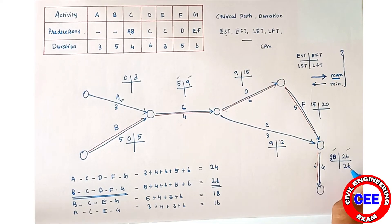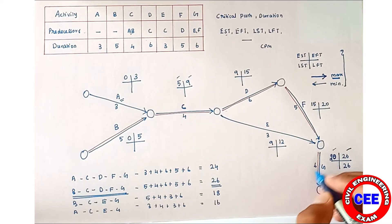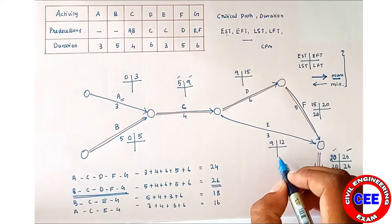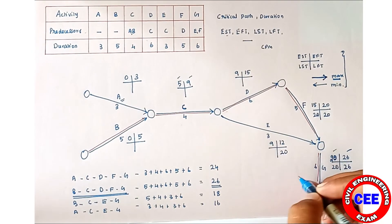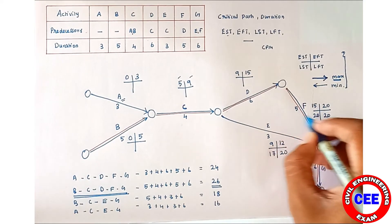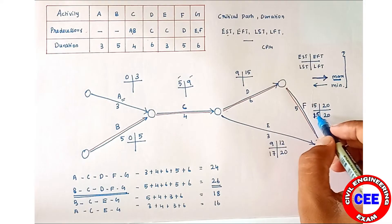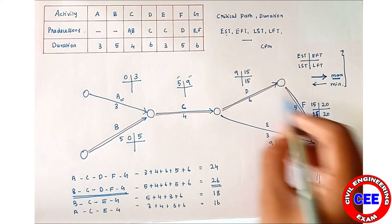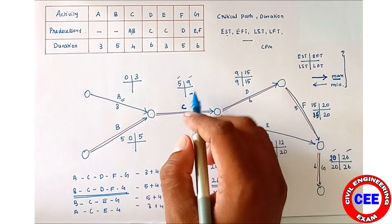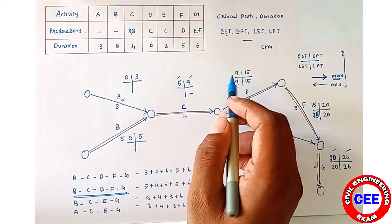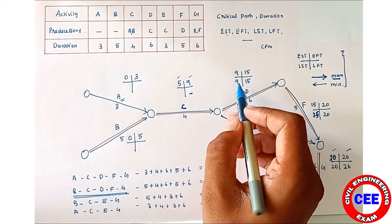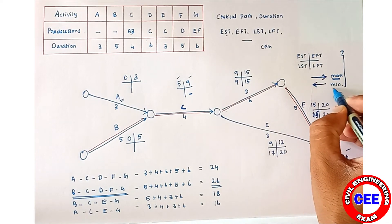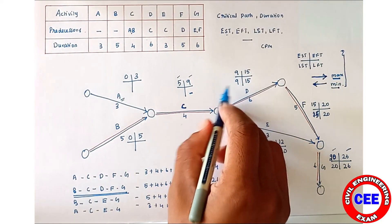Now we find LST and LFT. We put LFT = 26 for G. Then 26 − 6 = 20, so LST of G = 20. Going back, LFT of F = 20, and LST of F = 20 − 5 = 15. LFT of E = 20, and LST of E = 20 − 3 = 17. We put LFT of D = 15, and LST of D = 15 − 6 = 9. For C activity, the LFT is the minimum of the LST values of its succeeding activities D and E, which are 9 and 17. In the reverse direction we take the minimum, so LFT of C = 9.